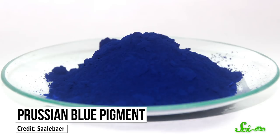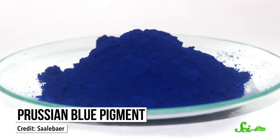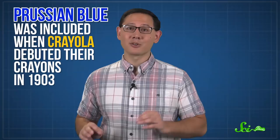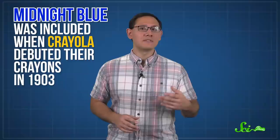One of the first pigments made in a lab was Prussian blue. It was created in Berlin around 1706, and was famously used to dye the uniforms of the Prussian army. The color was included when Crayola debuted their crayons in 1903, and it still appears in crayon packs today. You just might know it by a different name, since it's been called Midnight Blue since 1958.